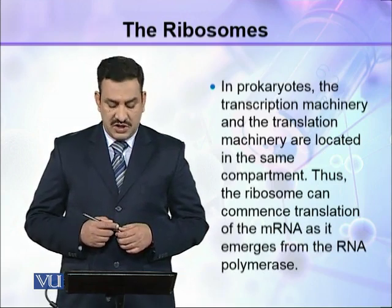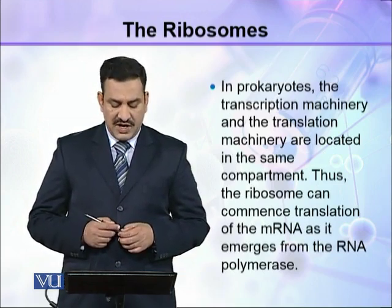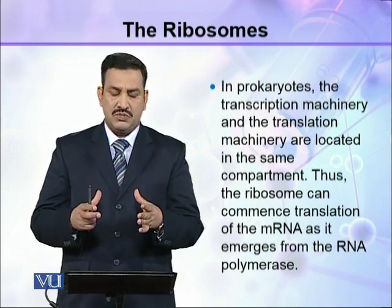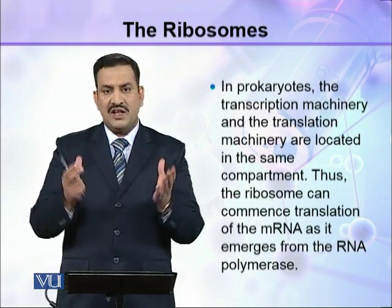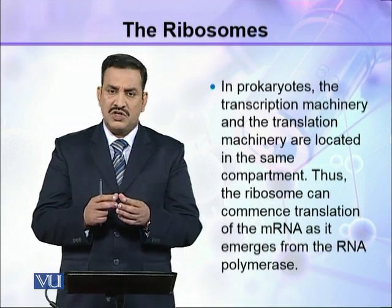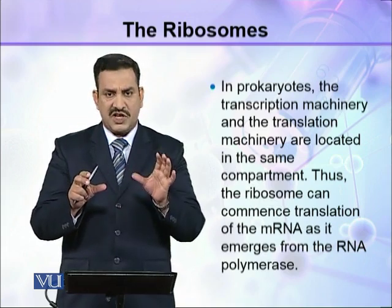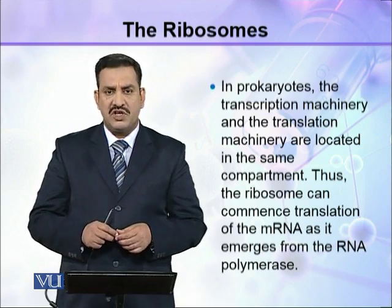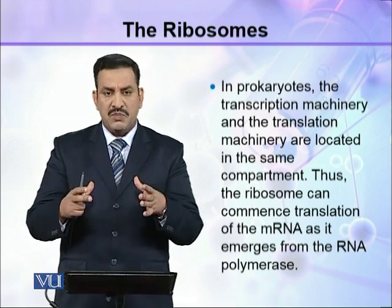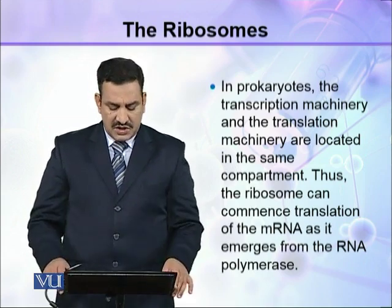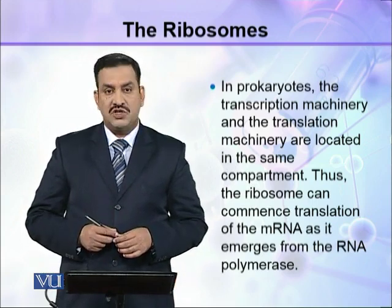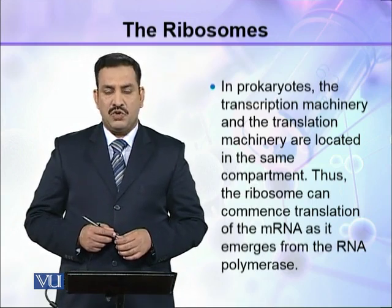In prokaryotes, the transcription machinery and the translation machinery are located in the same compartment, because in prokaryotes the whole cell is the same compartment. There is no compartmentalization between nucleus and cytoplasm because the nucleus is not present in prokaryotic cells. So all of this is present in the same compartment. Thus, the ribosome can commence translation of the mRNA as it emerges from the RNA polymerase.